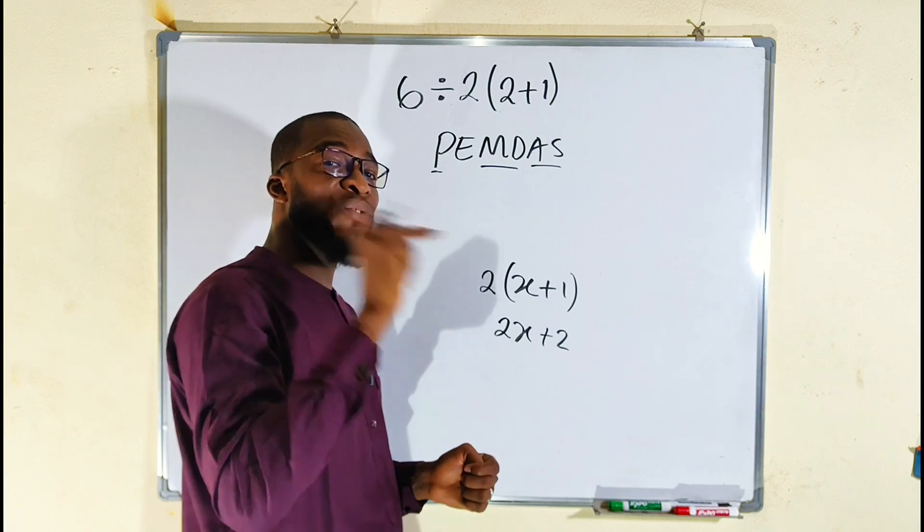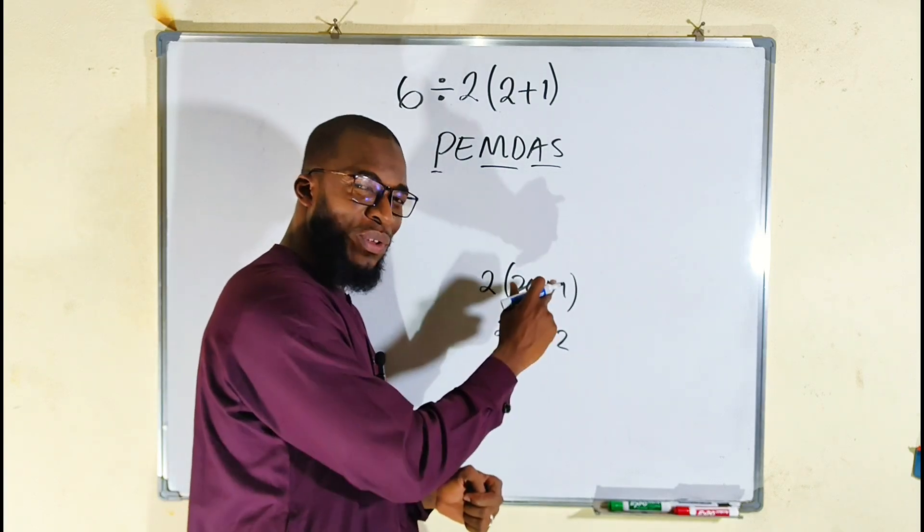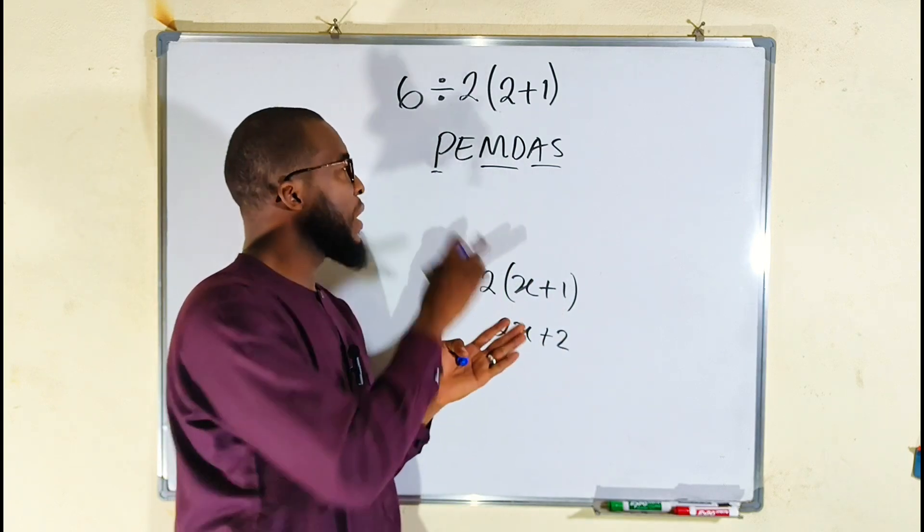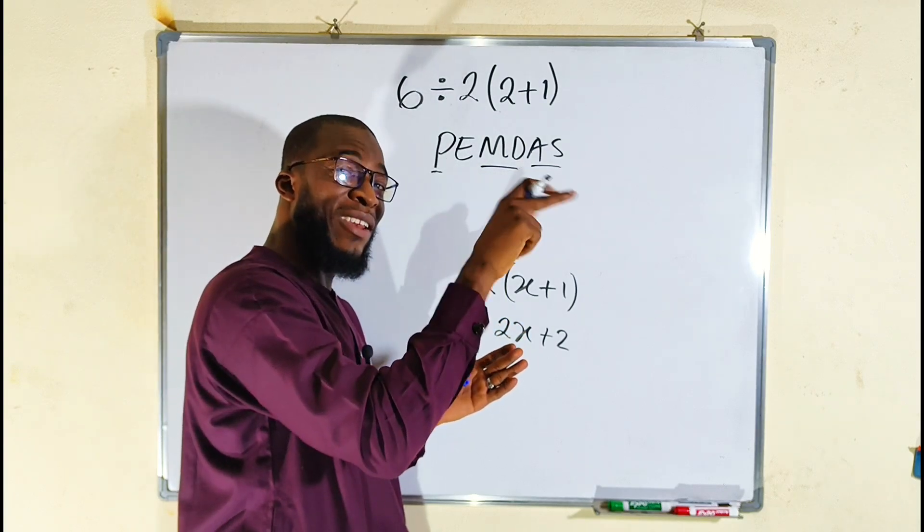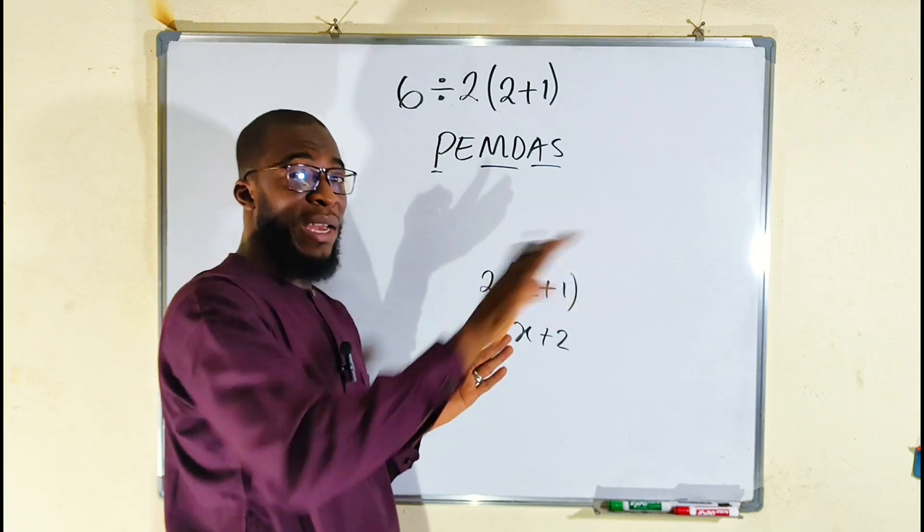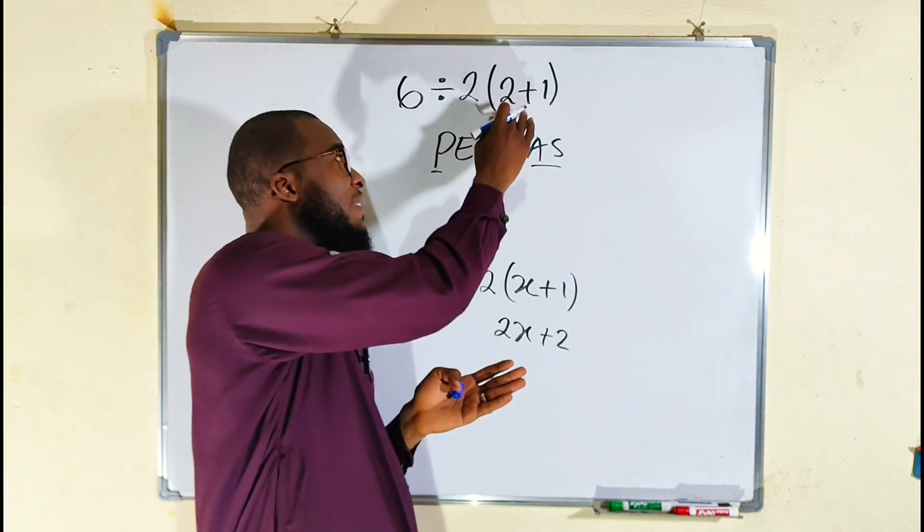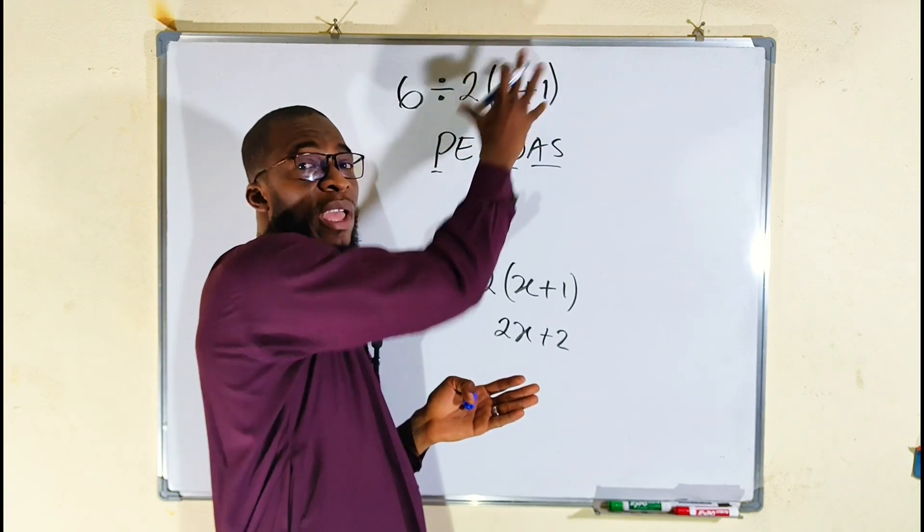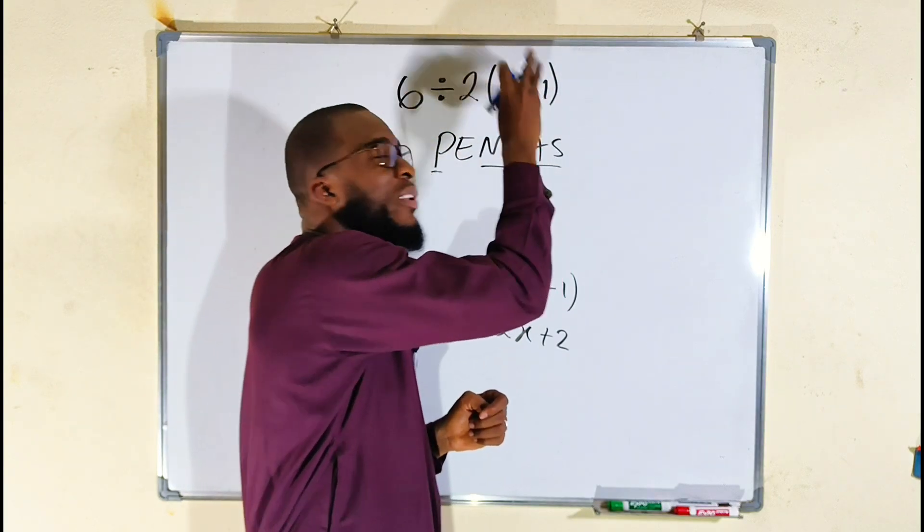Simplify what is right inside that parenthesis. It does not mean you should distribute. Because the relationship between the parenthesis and the number outside is multiplication. But this P is telling us to simplify what is right inside. It does not mean to expand or distribute. Some people fail this problem because they believe this P stands for 2 times whatever is inside. No.